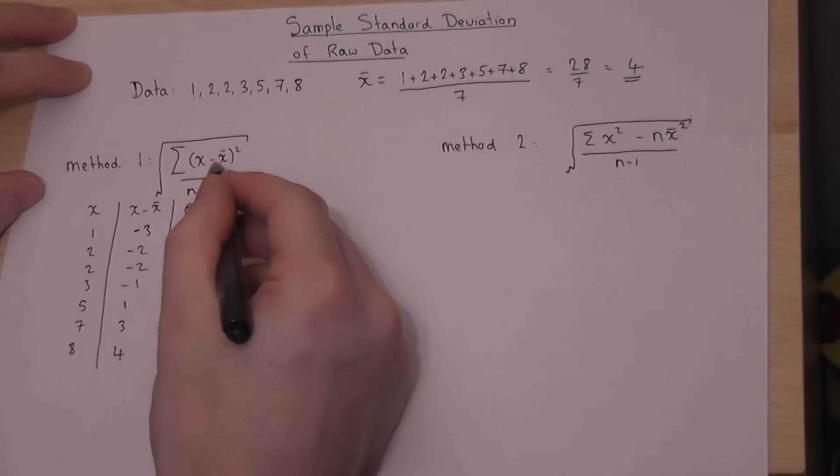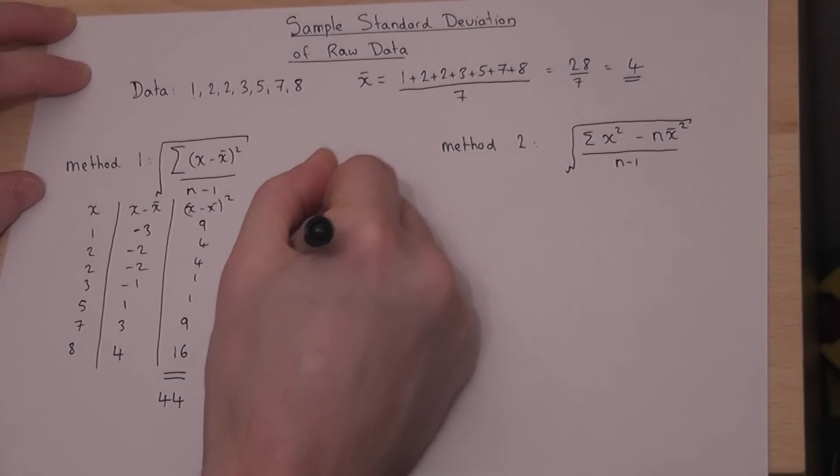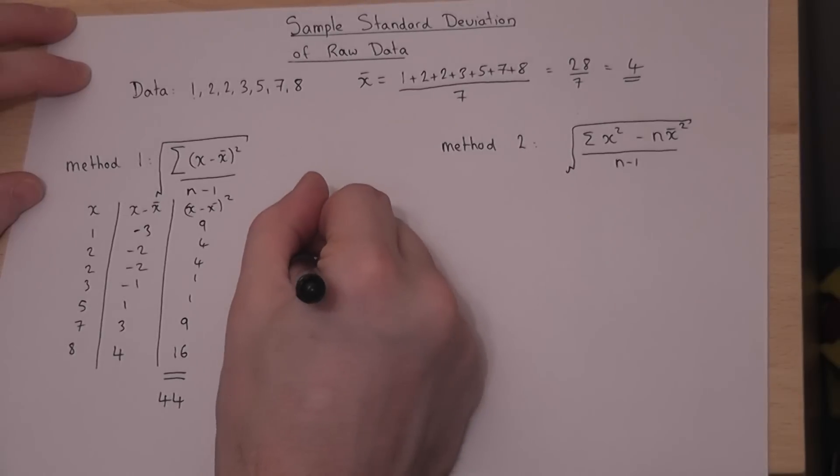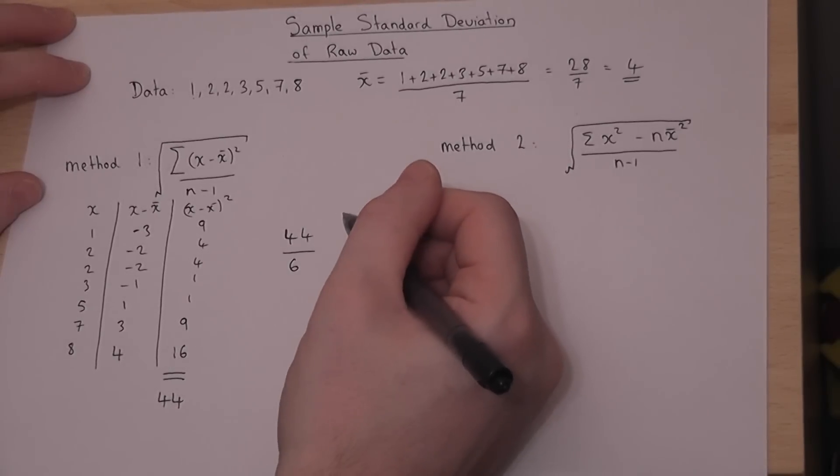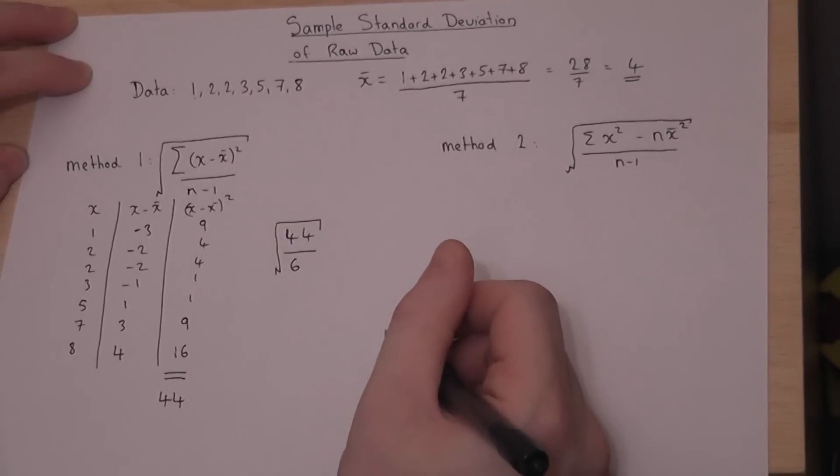Then, to use the formula, it's the sum, which is 44, over n minus 1. Well, n was 7. 7 take 1 is 6. So it's 44 divided by 6, all square rooted.